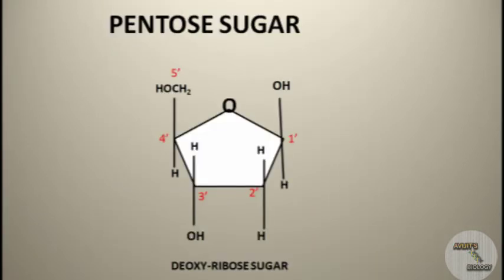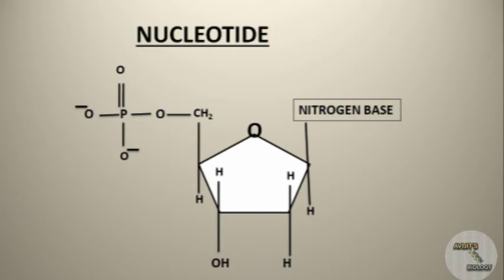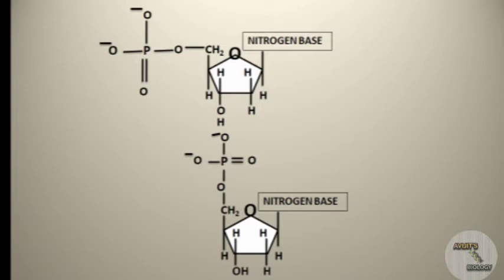The pentose sugar of DNA is deoxyribose. Now let's see the structure of a nucleotide of deoxyribonucleic acid. In the previous video I have discussed how a nucleotide is formed, so if you need any help you can see that video. These nucleotides are joined together to form a polynucleotide chain, which is a single strand of DNA.